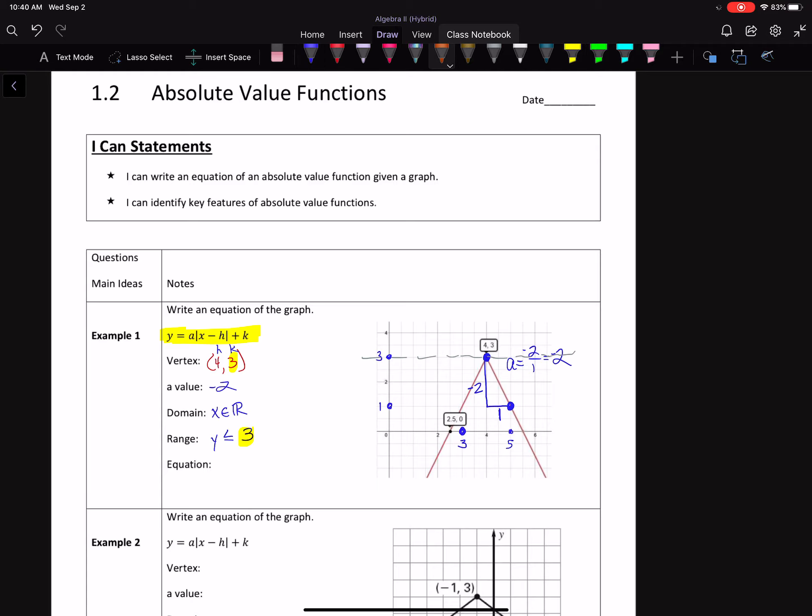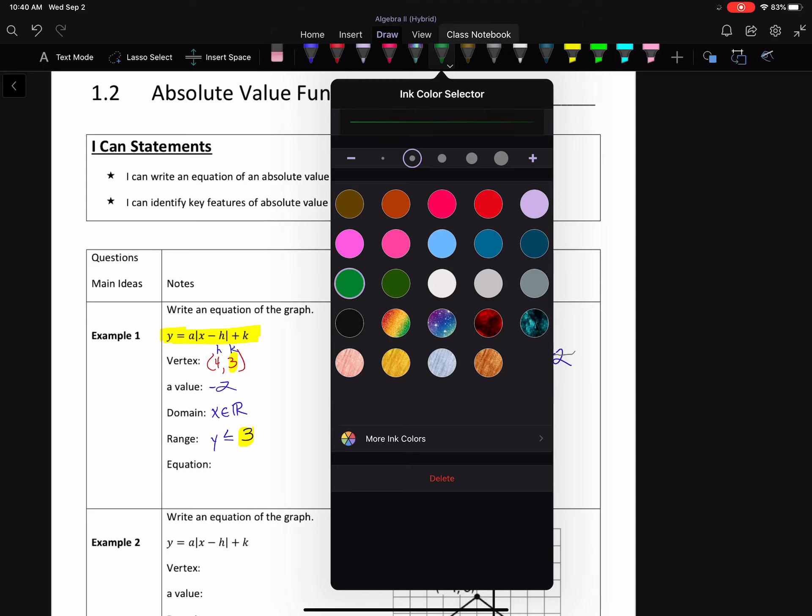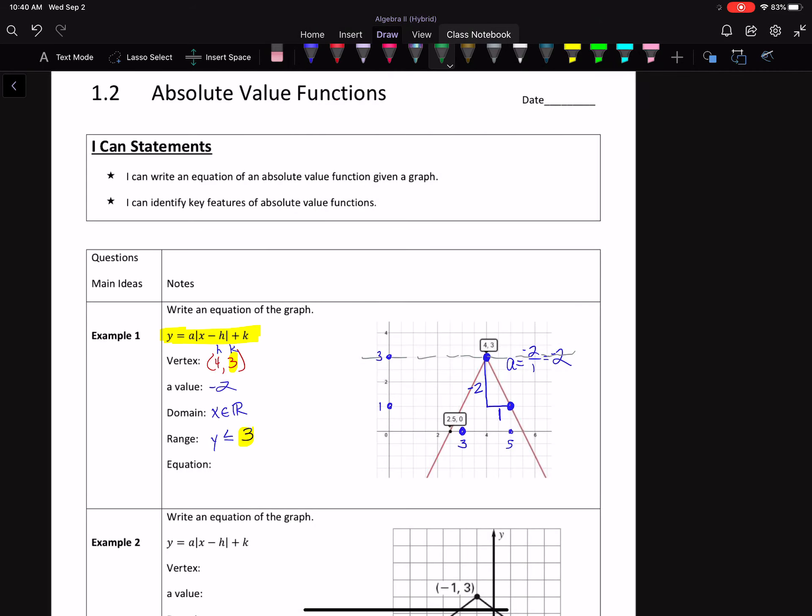So finally, what is my equation then? Let's see if I can pick a different color. Perfect. Well, we're going to start with y equals, the A value is negative 2, and then the absolute value symbol, x. It looks like h is 4, but it's going to be x minus 4, and then plus 3, my k value, and you're done. A, h, and k. It's all you need to find. x and y will stay there. Plug in those three values, and that's it.